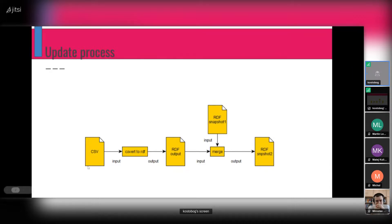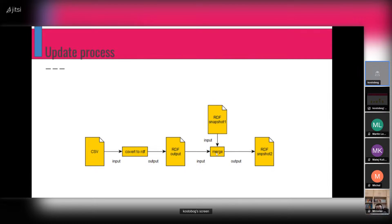The input CSV was updated, let's say, daily. There is one part of this pipeline where we convert it into RDF, and this output RDF is then merged with the current version of our snapshot, and we merge it into the new version.